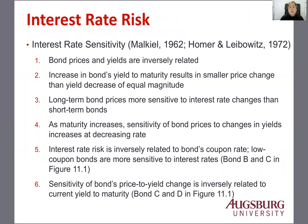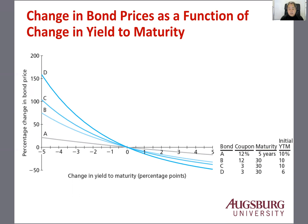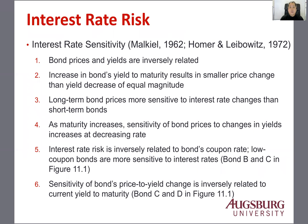Number three: long-term bond price is more sensitive to interest rate changes than short-term bonds. Looking at long-term versus short-term, B, C, and D are long-term and A is short-term. Comparing A with B, C, and D, the long-term bonds are more sensitive — the price changes are greater and the slope is steeper — which means long-term bond price is more sensitive.